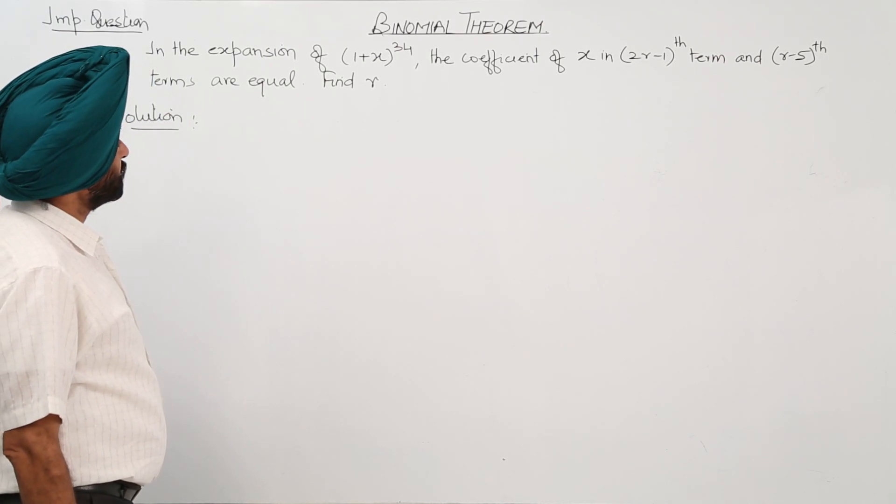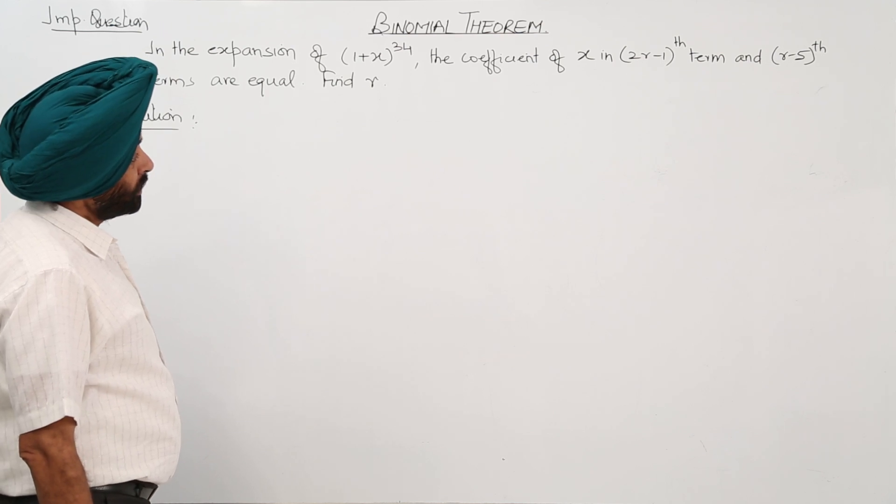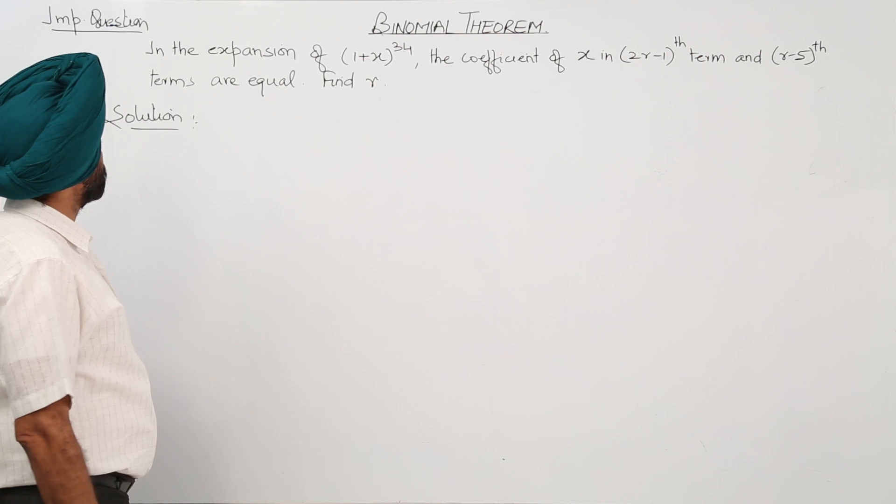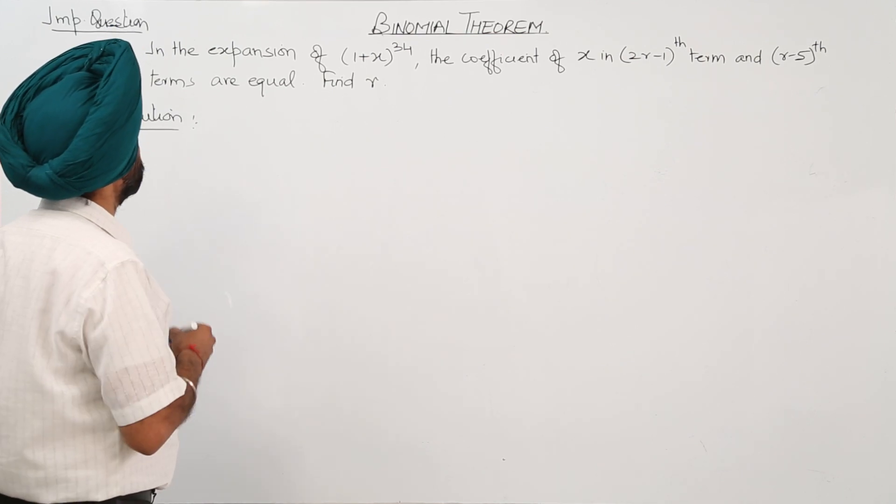In the expansion of (1+x)^34, the coefficients of x in the (2r-1)th term and (r-5)th term are equal. We have to find the value of r.